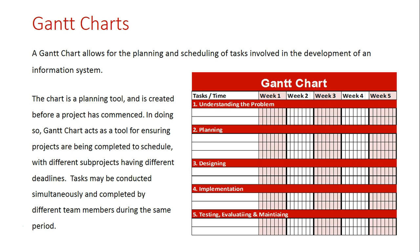Here you can see a Gantt chart broken up into subsections based on the system development life cycle. The chart is a planning tool created before the project has commenced, acting as a tool for ensuring projects are completed to schedule, with different sub-projects having different deadlines. Tasks may be conducted simultaneously and completed by different team members during the same period.